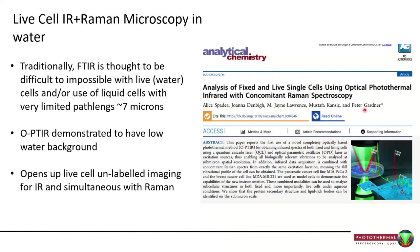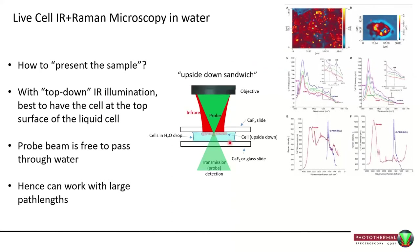Live cell imaging: a paper from Peter Gardner's group in Manchester compared fixed and live cells doing simultaneous IR and Raman. This sort of work is quite difficult with regular FTIR because of seven-micron path-length cells, which are incredibly difficult to work with. Here they used an upside-down cell configuration where the cell is sitting inverted so the IR light hits it first and doesn't have to go through all that water, and then the probe beam is measured in transmission mode. That study worked out quite well.